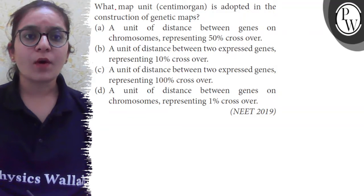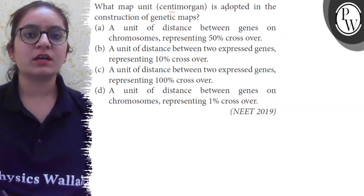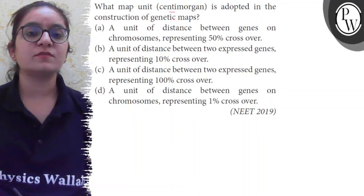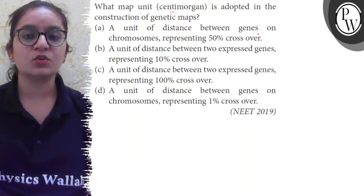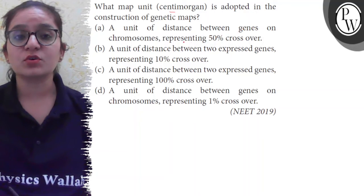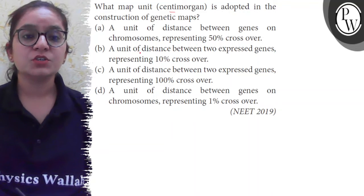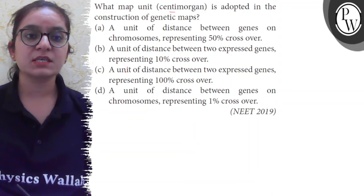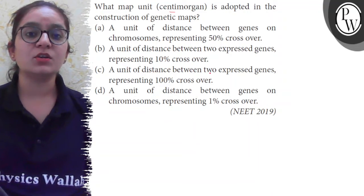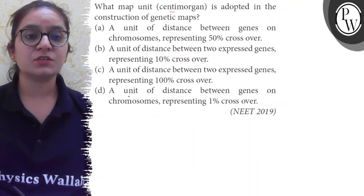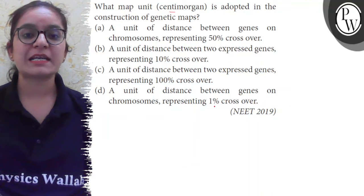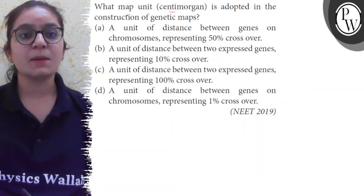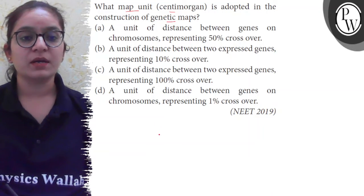Hello students. The question is: what map unit centimorgan is adopted in the construction of genetic maps? A) A unit of distance between two genes or chromosomes representing 50% crossover. B) A unit of distance between two genes representing 10% crossover. C) A unit of distance between two genes representing 100% crossover. D) A unit of distance between genes on a chromosome representing 1% crossover.